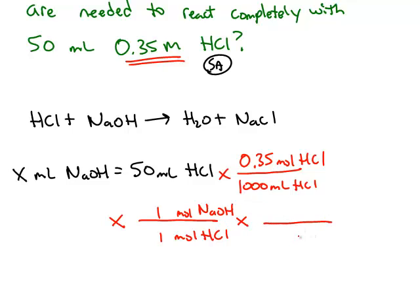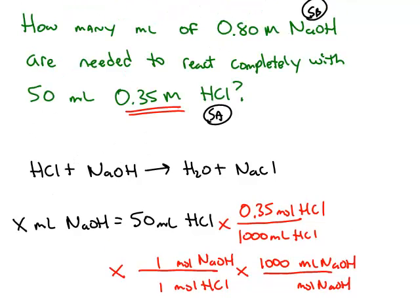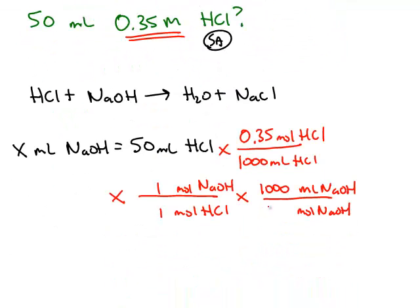And then we want to turn moles of sodium hydroxide into milliliters. And this is another conversion using molarity, and the molarity of the sodium hydroxide was 0.8 moles per liter.